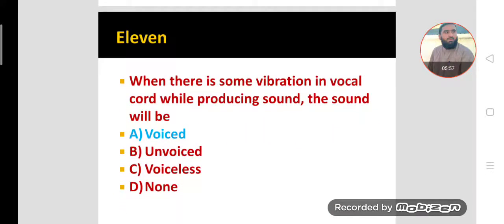MCQ eleven. When there is vibration in the vocal cords while producing a sound, the sound will be voiced. We can feel this by touching the throat with a finger — when producing voiced sounds we feel vibration. When producing unvoiced sounds there is no vibration in the vocal cord. So when vibration is felt while producing sounds, the sound will be a voiced sound.